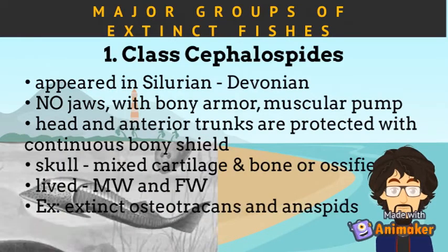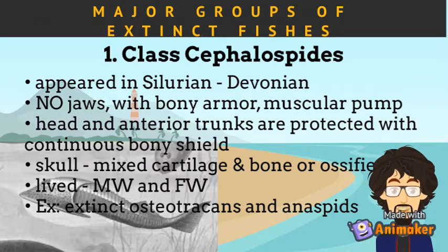Class Cephalaspides or Cephalaspidomorphy first appeared in the Silurian until the Devonian period. They do not have jaws, possessed bony armor, and had a muscular feeding pump. Their head and anterior trunks are protected with a continuous bony shield. Their skull is either mixed cartilage and bone or ossified throughout. They lived in both marine and freshwater environments. Examples are extinct osteostrachans and anaspids.